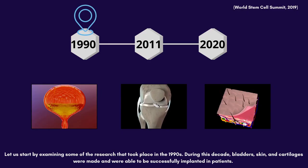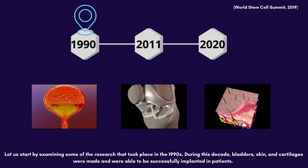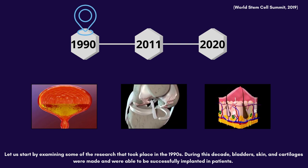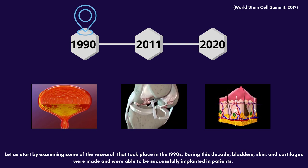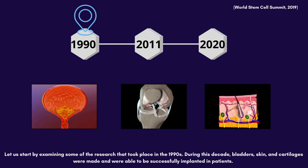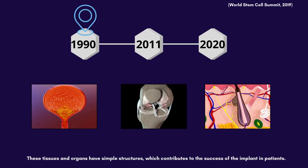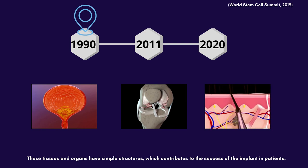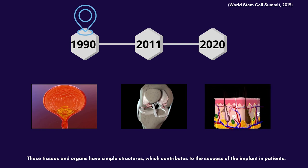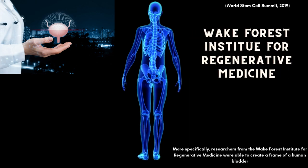Let us start by examining some of the research that took place in the 1990s. During this decade, bladders, skin, and cartilage were made and were able to be successfully implanted in patients. These tissues and organs have simple structures, which contribute to the success of the implant in patients.